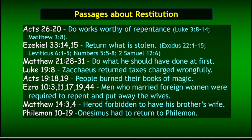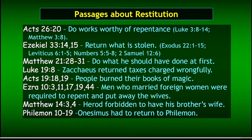Luke 19:8 — Zacchaeus, when he became a disciple of the Lord, said he would return whatever he'd taken wrongfully as a tax collector. Acts 19 — people who were converted burned their books of magic. Ezra chapter 10 — some men who had married wives they had no right to marry under the law, when they repented, had to leave those marriages. And in Matthew 14, John told Herod that he had taken his brother's wife and had no right to have her, which meant he had to give her up. Then we have the story of Onesimus — he had been a slave, ran away, was converted. Paul's conclusion was: you have to go back. You can't just say, well, I'm free now — you're still owned by a master.